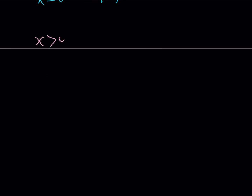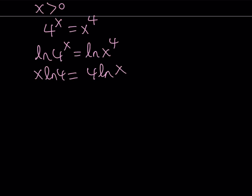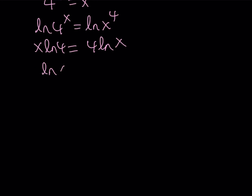So let's focus on positive solutions. Suppose x is greater than 0. That gives us a simpler equation: 4 to the power x equals x to the power 4. Let's solve this by taking the natural logarithm of both sides. From here we get x ln 4 equals 4 ln x. Rearranging, we get ln x over x equals ln 4 over 4.